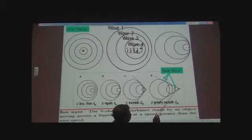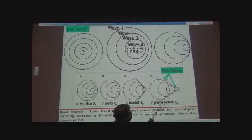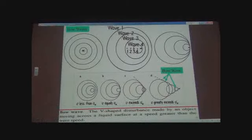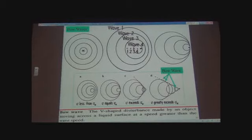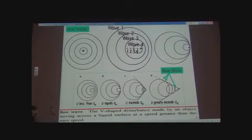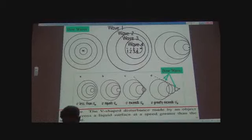Now, if you draw a tangent to this, like an envelope line to these waves, you'll end up with what's called a bow wave. And this, we will see on the next slide, applies to supersonic planes. Now, a bow wave is the V-shaped disturbance made by the object moving across the liquid surface at a speed that's greater than the wave speed. So, that's the illustration of that. And with that, we move to the next slide.